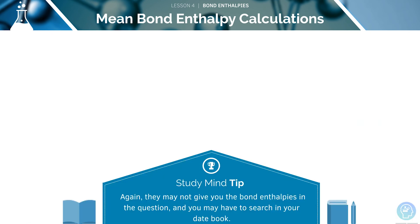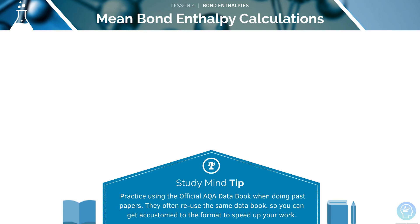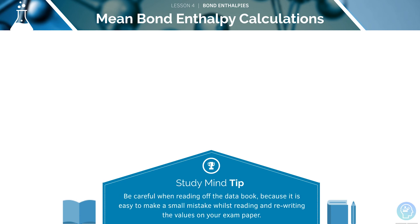You might have to use the data book to find the bond enthalpies needed to answer the question. You should become familiar with using the AQA data book when doing your past papers — this will save you a lot of time in the real exam. Be careful when using the data book in exams though, as it's easy to make mistakes when copying values onto your exam paper.